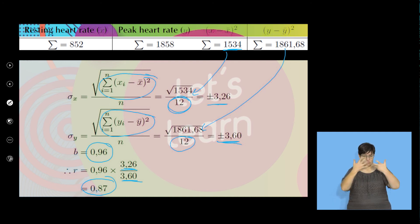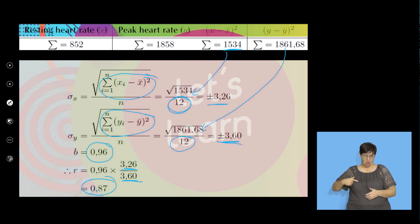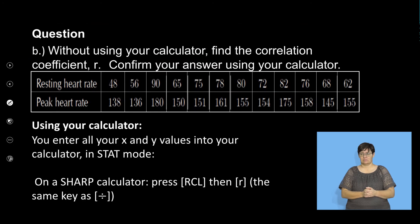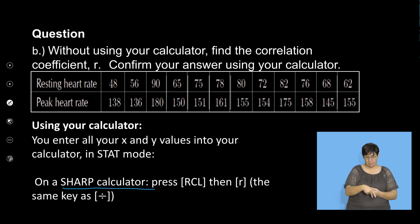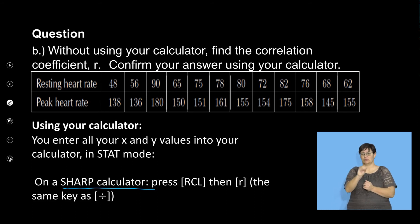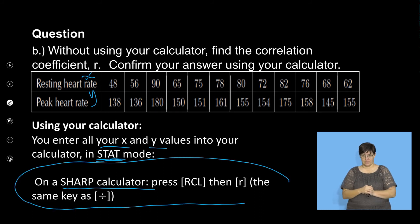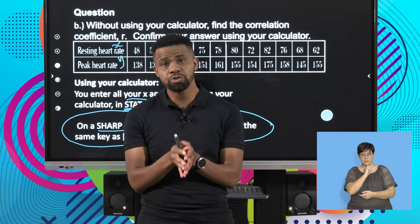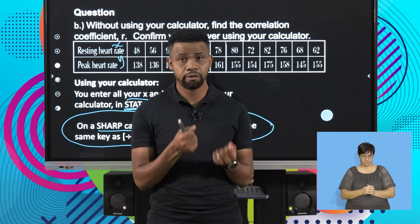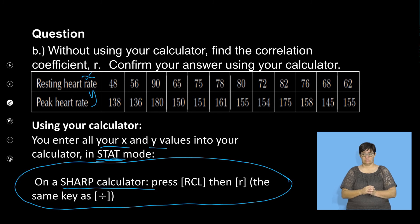Usually I would use my calculator to calculate the correlation. It's a long and tedious calculation without one. Some of you might have a Sharp calculator and some of you might have a Casio. Using a Sharp calculator, you have to enter your x and y into the calculator in stats mode. I will demonstrate this using a Casio calculator — how do you calculate the correlation coefficient.